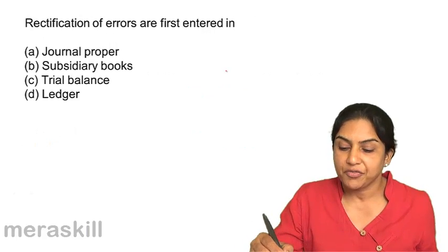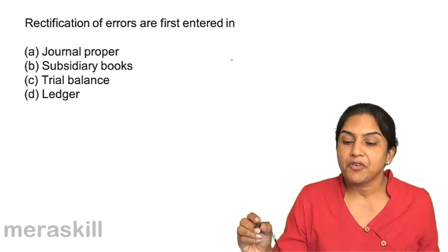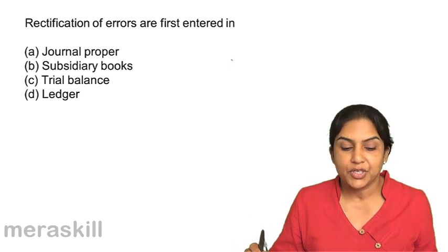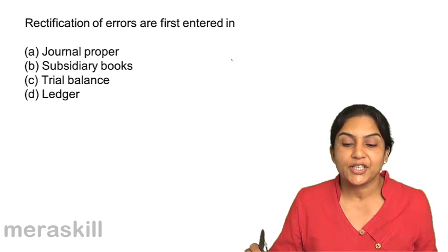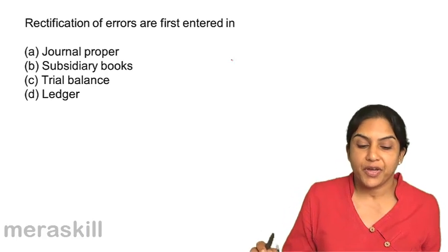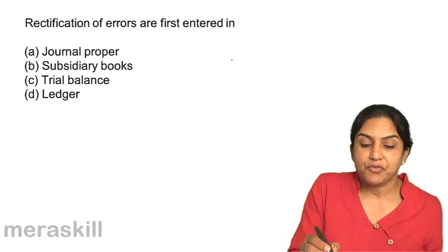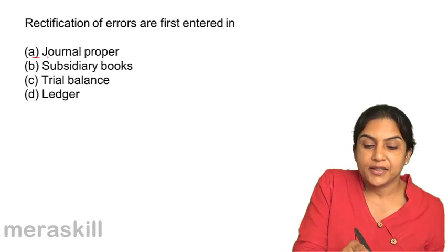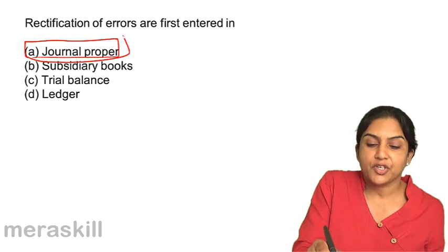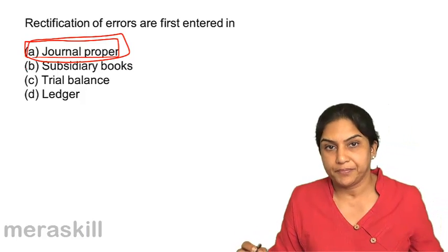Rectification of errors are first entered in: A, journal proper; B, subsidiary book; C, trial balance; or D, ledger. Rectification entries go through the journal proper.